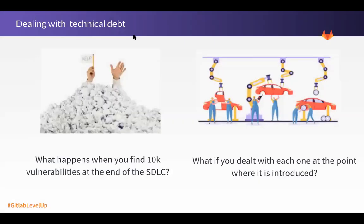Plant this seed: what happens when they find 10,000 vulnerabilities at the end of the SDLC? Now they've got technical debt to deal with. Boeing recently got into trouble because they knew about safety findings but didn't act on them. If you find all these vulnerabilities and aren't able to fix them right away, at some point somebody will get sued because they knew the vulnerability was there and didn't prioritize it. Make the case for dealing with the vulnerability at the point it's introduced — in development — and fixing it there as part of the SDLC.